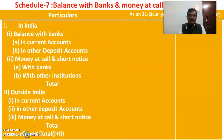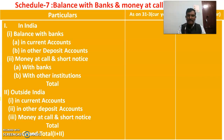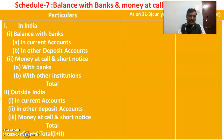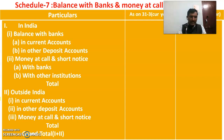Schedule 7 covers Balance with Banks and Money at Call and Short Notice. In India, we have balance with banks in current accounts, in other deposit accounts, and money at call and short notice with banks and with other institutions. Outside India, we have balances in current accounts, other deposit accounts, and money at call and short notice. The total is taken to the balance sheet.